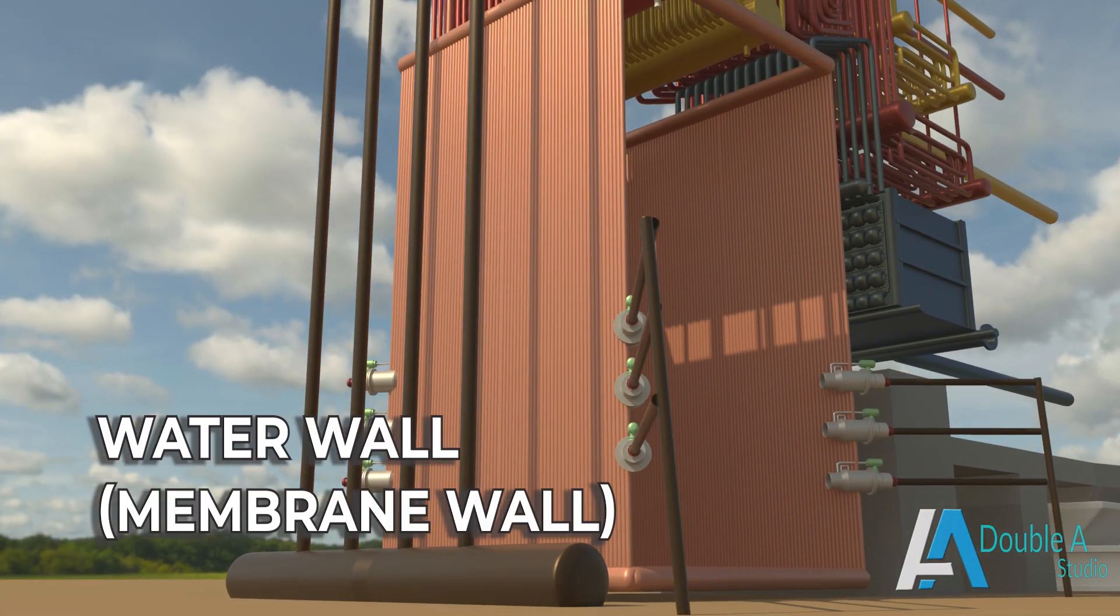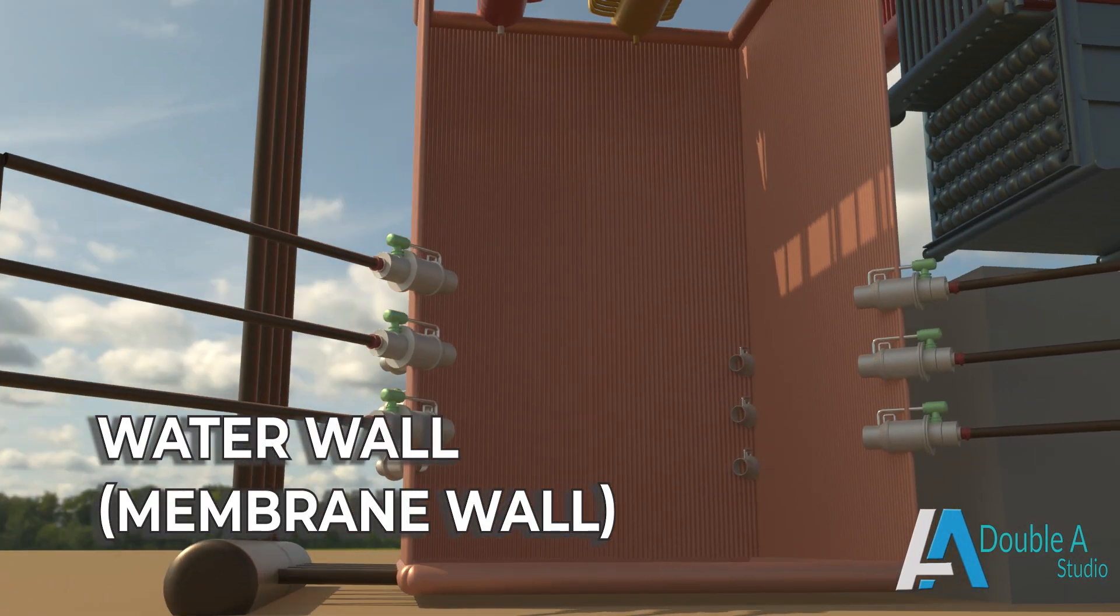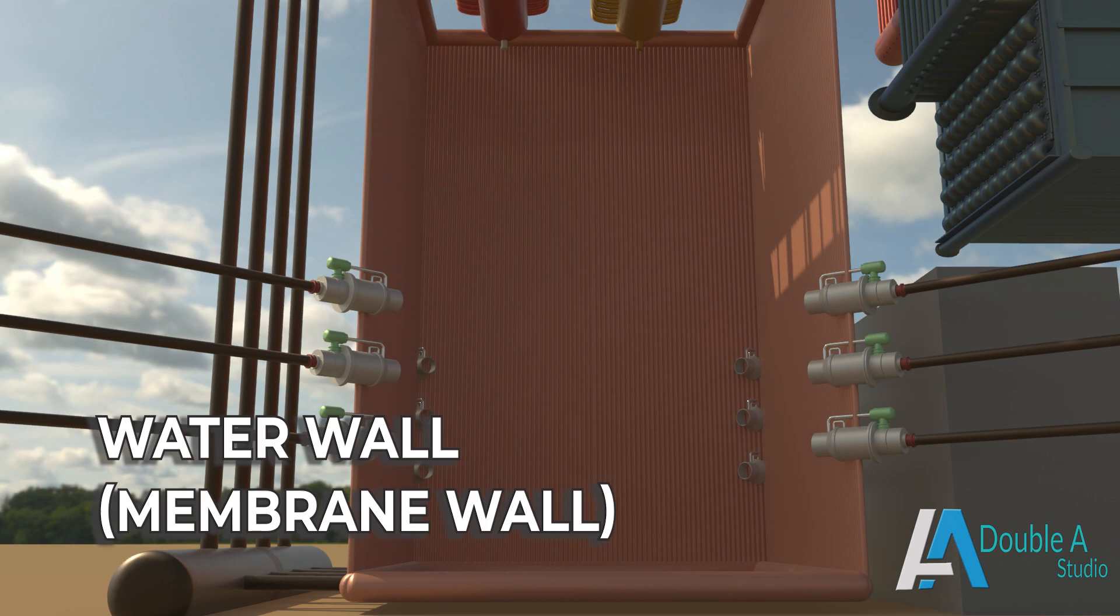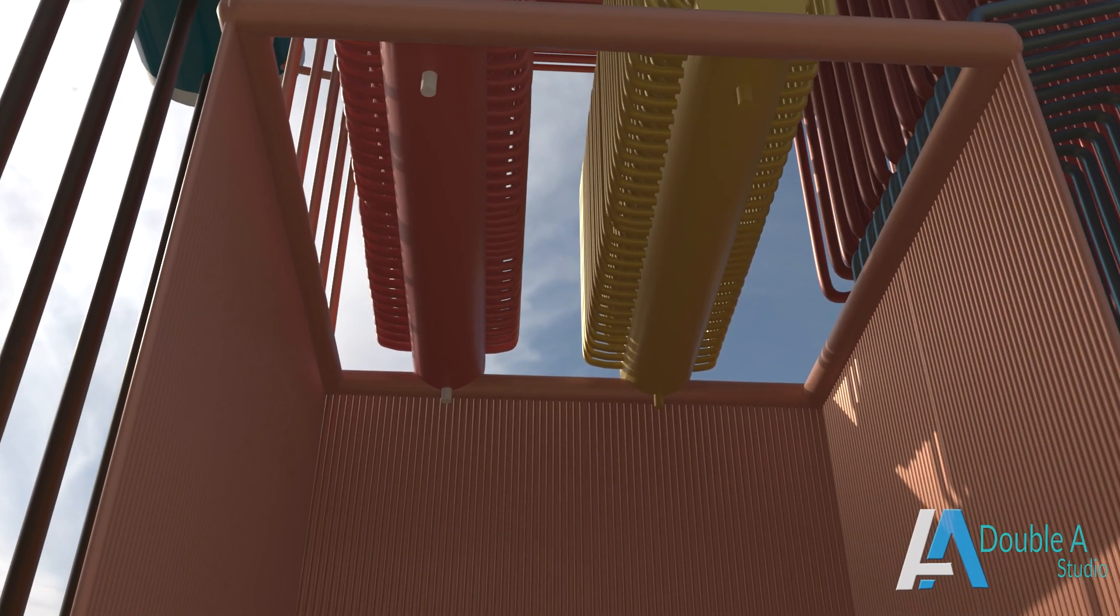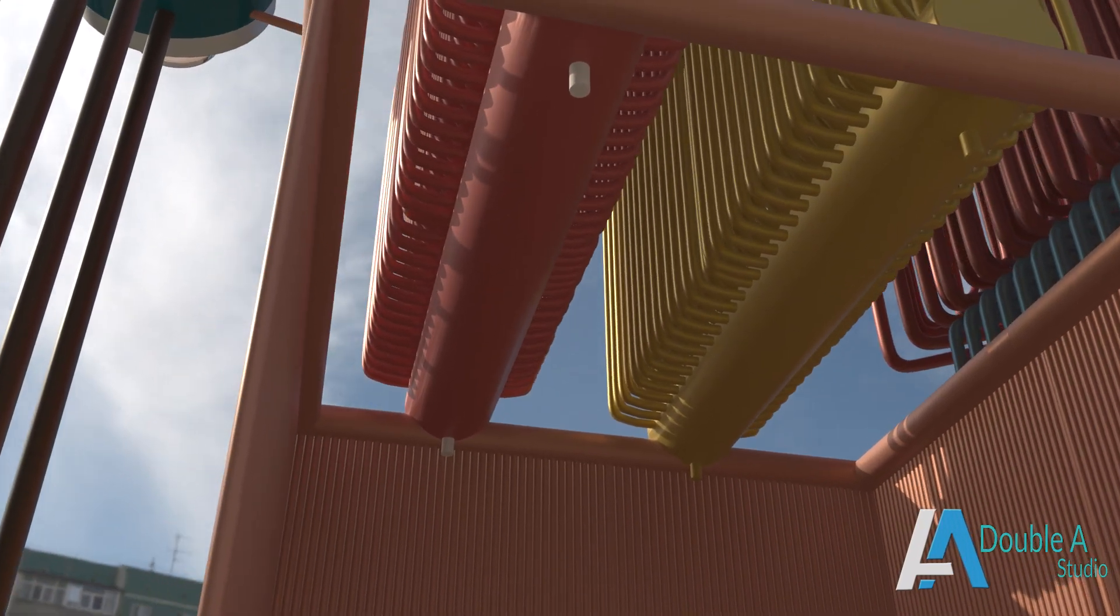First is the water wall, also known as a membrane wall. Water walls are a series of steel tubes welded together to form walls of the combustion chamber.